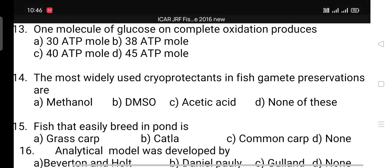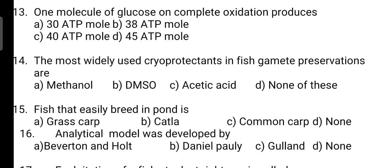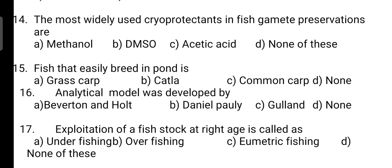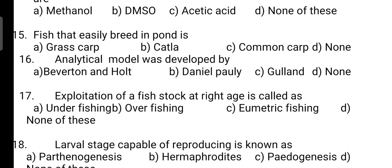Next question: fish that easily breeds in a pond? The correct answer is Option C — it is common carp. Common carp easily breeds in a pond. Next, the analytical model was developed by? The correct answer is Option A — it is Beverton and Holt.